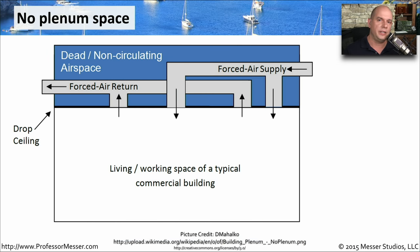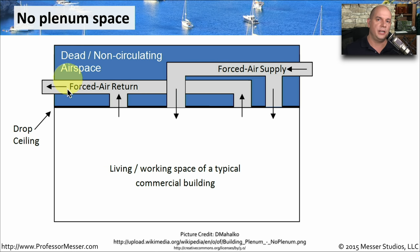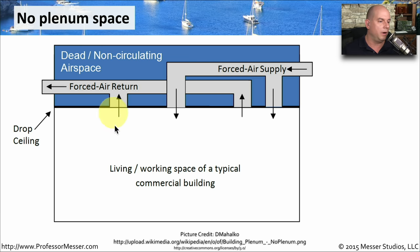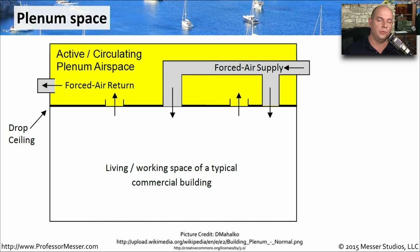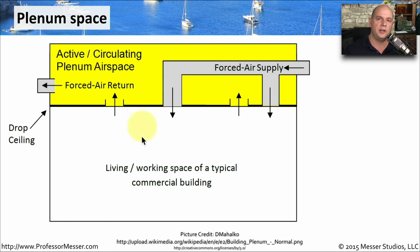In many commercial buildings, there's a space between the drop ceiling and the actual ceiling of the building that can contain pipes, air supplies, and network cabling. If your air system uses its own ductwork rather than that shared space above the ceiling, then you don't have a plenum concern. But some environments use that shared area above the drop ceiling as the return air path back to the HVAC system, and it's in that shared plenum where we are more concerned about the network cables that may be in this space.